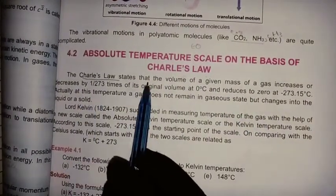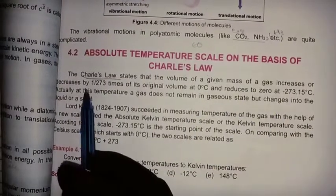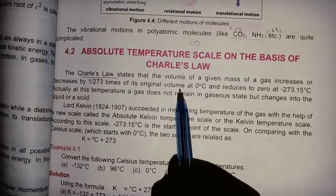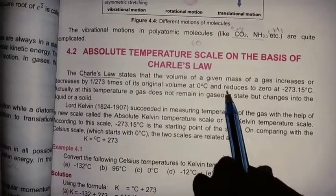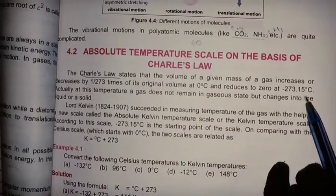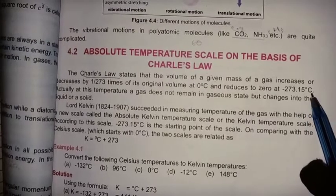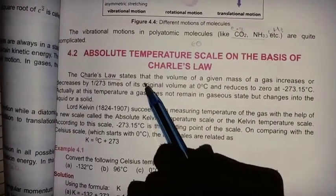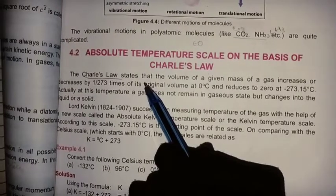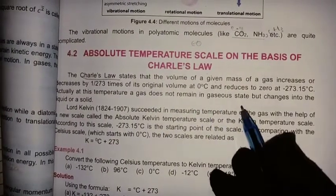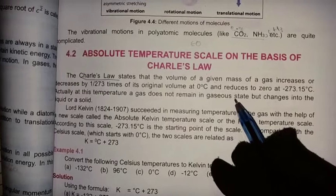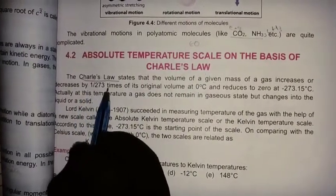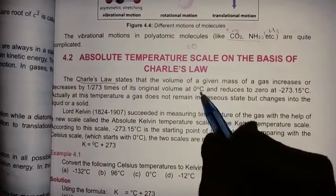Charles Law states that the volume of a given mass of gas increases or decreases by 1/273 times of its original volume at 0 centigrade, and reduces to 0 at minus 273.15 centigrade.